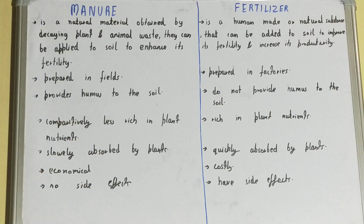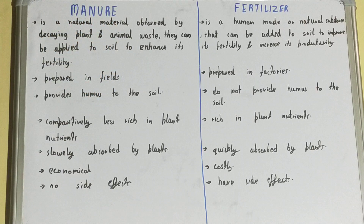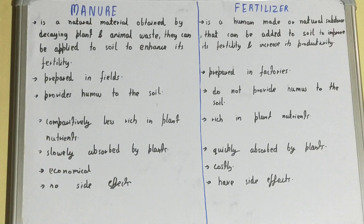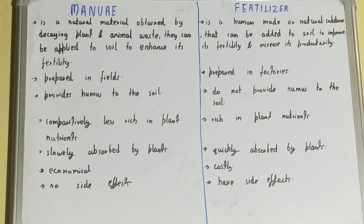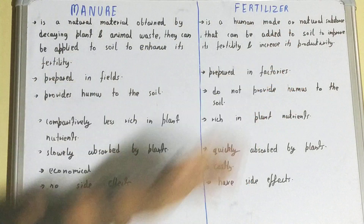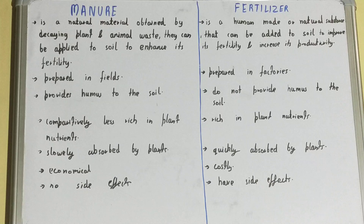Manure is comparatively less rich in plant nutrients, because the decayed plant and animal waste does not contain all the nutrients needed for plants. But fertilizer is rich in plant nutrients, because in factories only the specific nutrients that are helpful in the growth of plants are used to make the fertilizer.